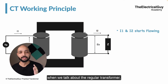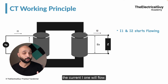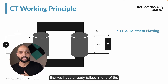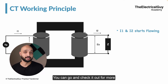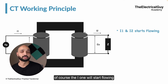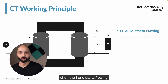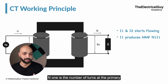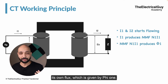When we talk about the regular transformer, I1 depends upon I2. So when there is a load, I2 will flow and then only the current I1 will flow. In a practical transformer, even if you do not connect the load, a small amount of current will flow — that is very negligible, to serve the losses. So when I2 starts flowing, I1 will start flowing in the transformer. When I1 starts flowing, it produces its own magnetomotive force given by N1 times I1, where N1 is the number of turns at the primary side and I1 is the current flowing in the primary side.